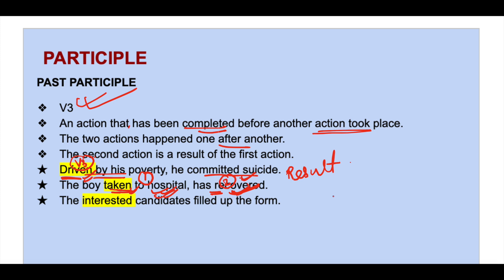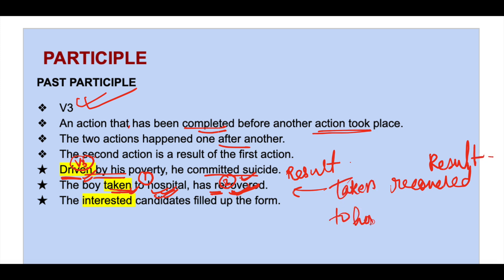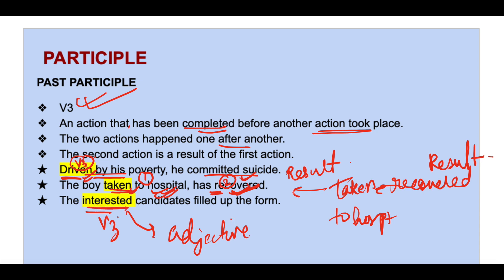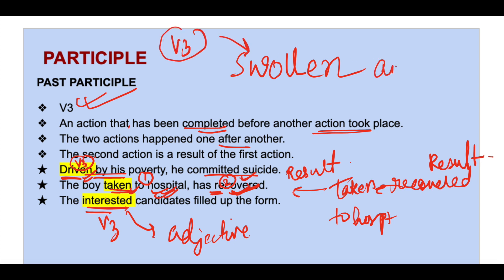'The boy taken to the hospital has recovered' — the recovery is the result of being taken to hospital. Past participle V3 can also act as an adjective. For example: 'The interested candidates filled up the form' — 'interested' describes the candidates. Similarly, 'swollen ankle' — here 'swollen' is V3 acting as an adjective modifying the noun 'ankle.'